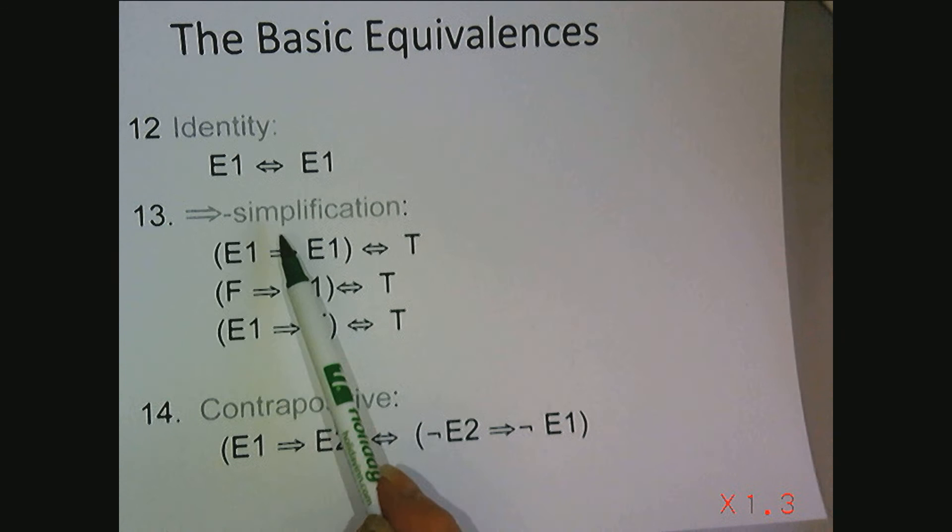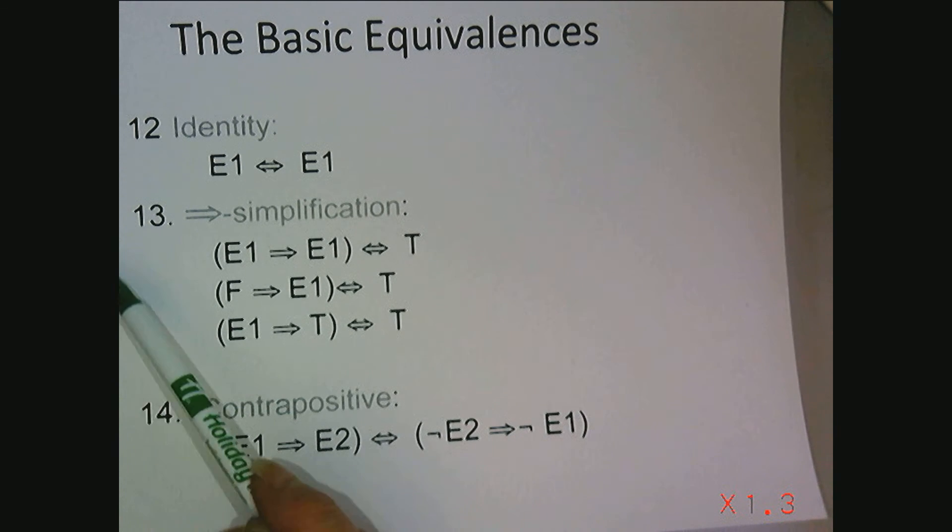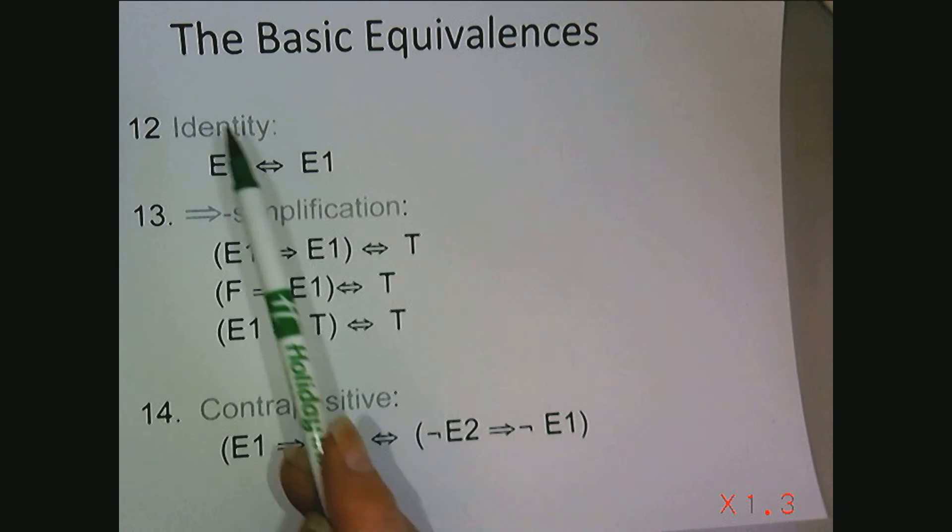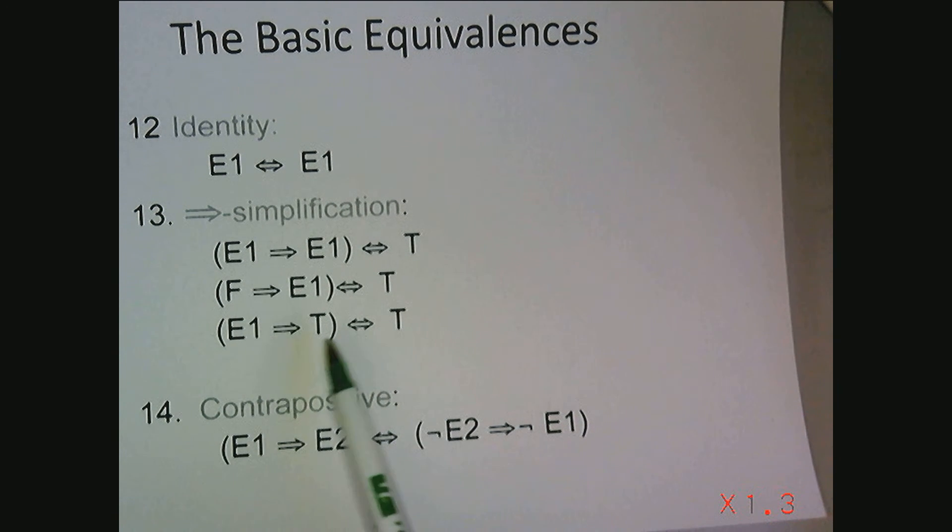We run into implications often. And you could prove these either with truth tables or even actually with the other basic equivalences. But it's good for us to notice that anytime you have an expression implying itself, that's always true. False implying an expression is always true. And any expression implying true is always true. These will be very convenient for us to use in the future.